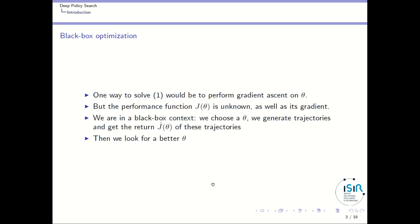Now that we have defined policy search, one way to solve the optimization problem of finding the optimum of J of theta would be to perform gradient descent on theta — we would take the derivative of J of theta with respect to theta and find the optimum. But the performance function J of theta is unknown, as well as its gradient. The only way to get information about J of theta is to choose a theta, generate trajectories with it, and get the corresponding return.